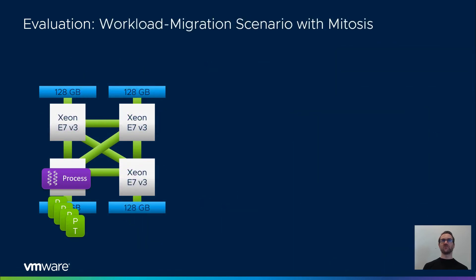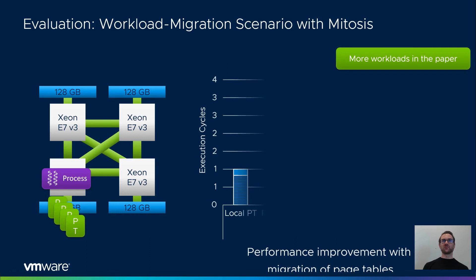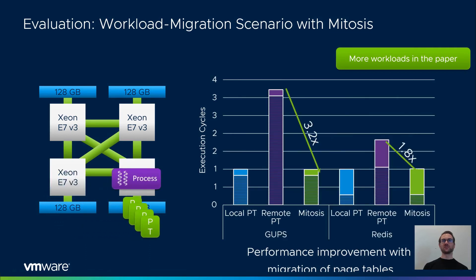In the second part of the evaluation, we measure the effects of the workload migration scenario with and without Mitosis. We take the configuration with node-local page tables and data pages as the base case. The graph on the right shows the measured runtime for GUPS and Redis workloads normalized to the base case where everything is local. With remote page tables, the runtime increases 1.8x and 3.2x respectively. Mitosis then migrates the page tables to the NUMA node where the workload has been migrated to, achieving a 3.2x and 1.x speedup compared to the remote page table case for GUPS and Redis respectively, thus achieving the same performance as the base case for both workloads. We refer to the paper for more workloads with similar results.